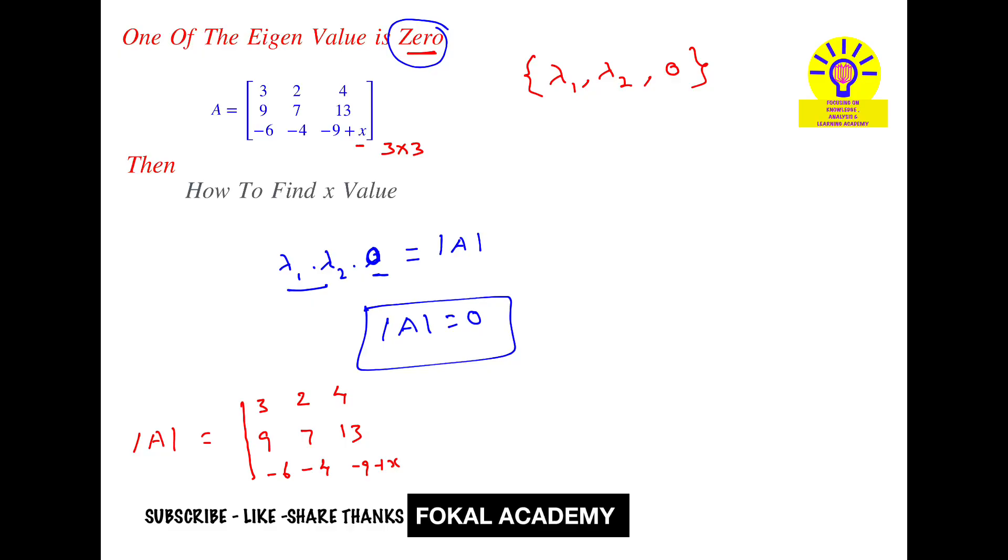So this is given as 0. So 3 into determinant of its minor, that is cross multiply here, so 7 into (-9 + x), next minus, and minus becomes plus, so 4 into 13, so plus sign here.